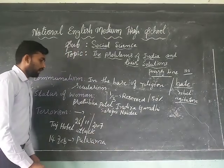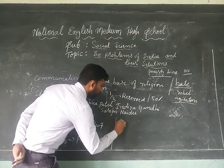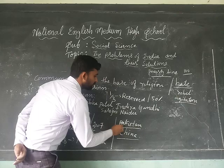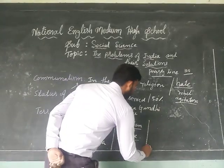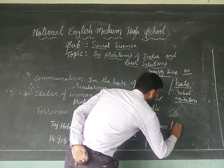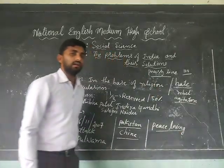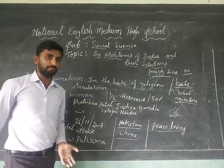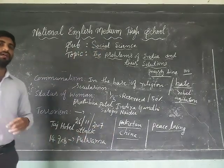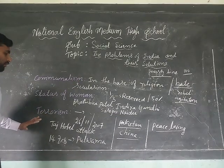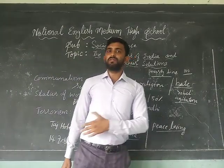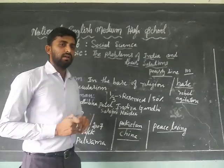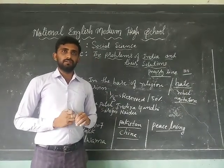Our neighbouring countries, particularly Pakistan and China, are more responsible for terrorism affecting India. But India is always a peace-loving nation — we want peace with neighbouring nations. However, neighbouring countries always want to attack India. This is also the biggest problem for India. There are various other problems beyond what is mentioned here. I hope you have understood this lesson. Practice it at home. Stay safe. Thank you.